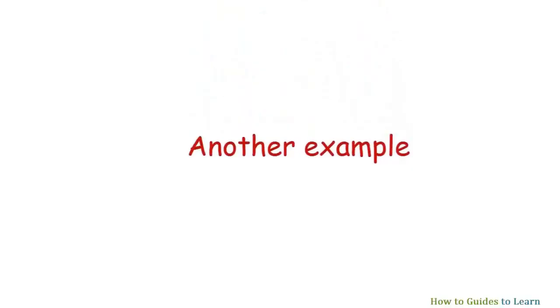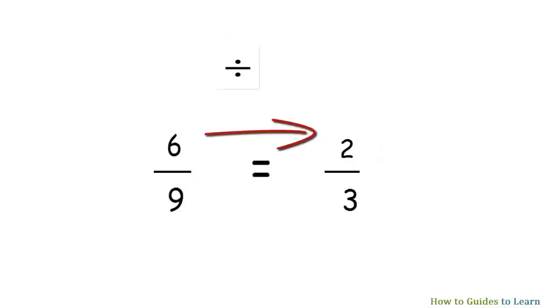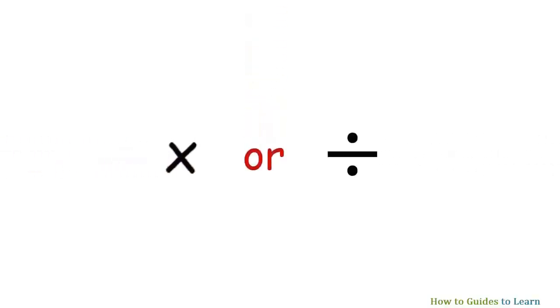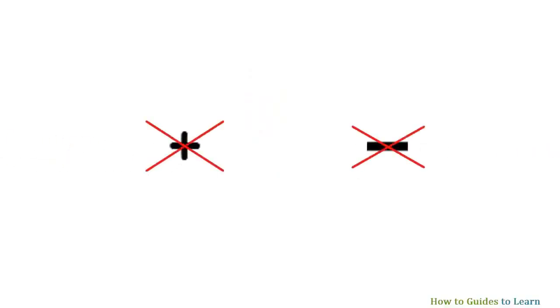Another example. In this example, we divide the numerator and denominator of one fraction by three to get the other fraction. Two fractions are called equivalent fractions when we multiply or divide the numerator and denominator of one fraction by the same number and get the other fraction. Remember that you can only multiply or divide to find an equivalent fraction — don't use any other operations, such as addition or subtraction.